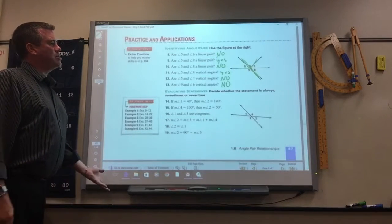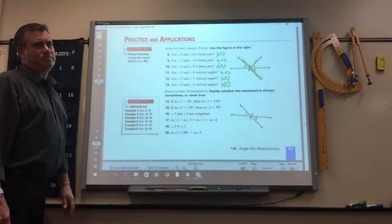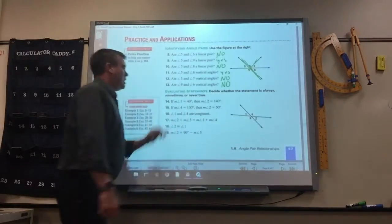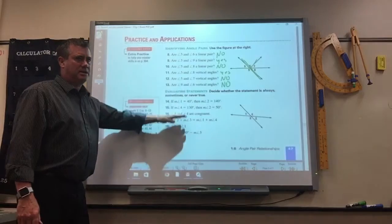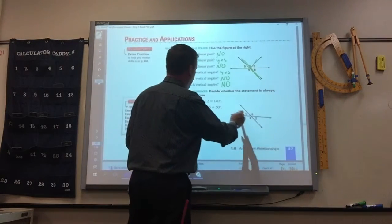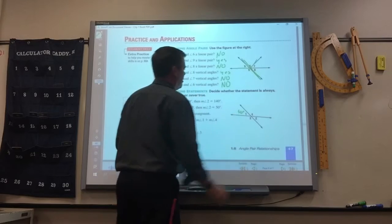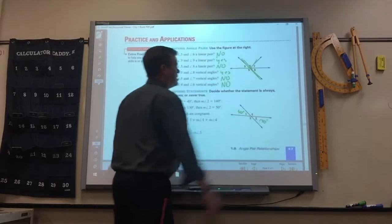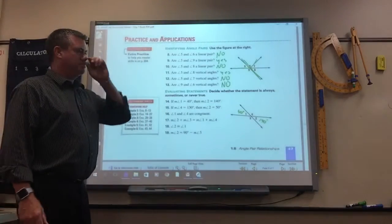Okay, sometimes, always, never. They always have these in the geometry books. Each question is independent. It doesn't keep going with the same numbers, just so you know. If angle 1 is 40, then 2 is 140. Is that sometimes, always, or never true? Never. Never true.